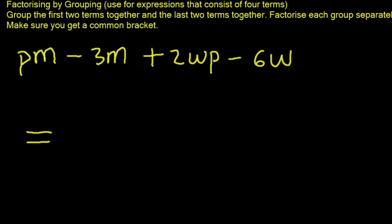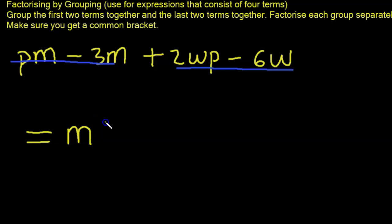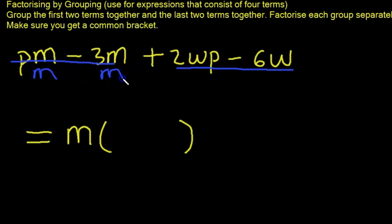Again we have a four-term expression — we factor by grouping. We group the first two and the last two terms. For the first group, the common factor is M. We divide each term by M. So M into MP leaves P, and M into M gives 1, leaving minus 3. The first group factors to M(P minus 3).